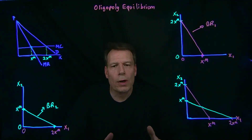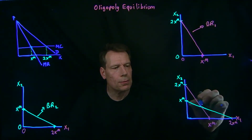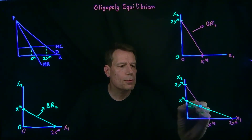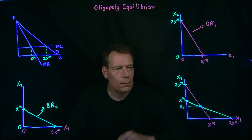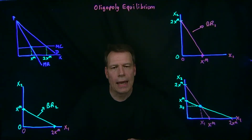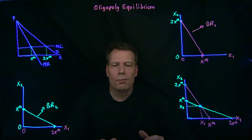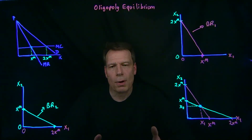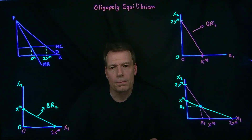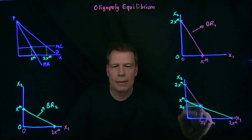Now we can ask: where might the equilibrium lie in this picture? You've probably already guessed — it's at the intersection of these two functions. At the intersection, firm 2 would produce this quantity and firm 1 would produce this quantity. Why might this be an equilibrium? Remember that an equilibrium in game theory is when two parties are best responding to each other, so that once the game is played, neither regrets what they did given what the other one did. That's the definition of what we call the Nash equilibrium. Let's check to see if that's the case at this intersection.